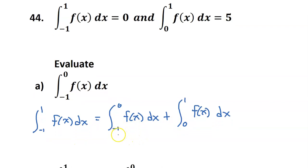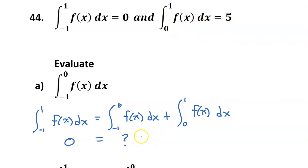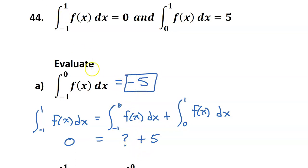We know that the integral from negative 1 to 1 is 0, so we have 0 equals the integral from negative 1 to 0 — this is the one we are trying to find — plus the integral from 0 to 1, which we're given as 5. So if 0 equals something plus 5, that something must be negative 5.